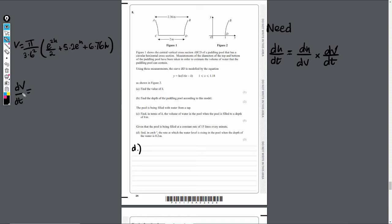So dV by dH, what will this be? If I differentiate this, that's going to be π / 3.6² like usual on the outside here. This is going to be times by e^(2h) now, so e^(2h). This will be 5.2e^h, nothing will change with that. And then finally, we're just going to get plus 6.76 here. So now we've got dV by dH.